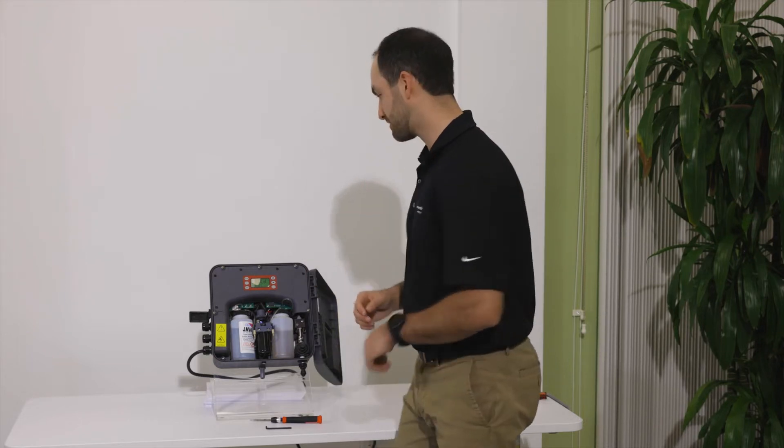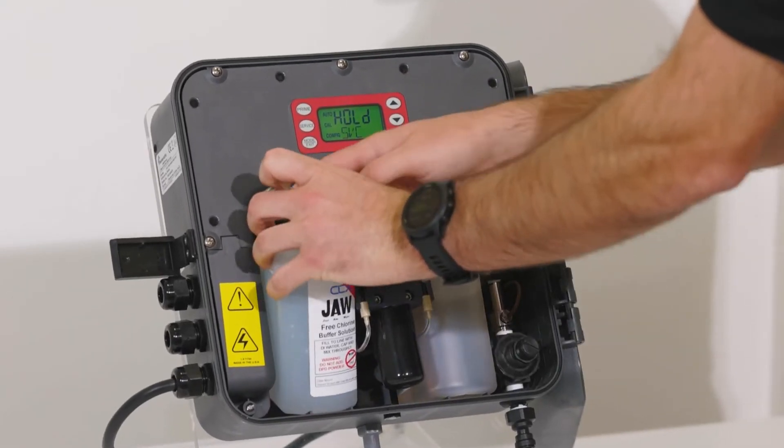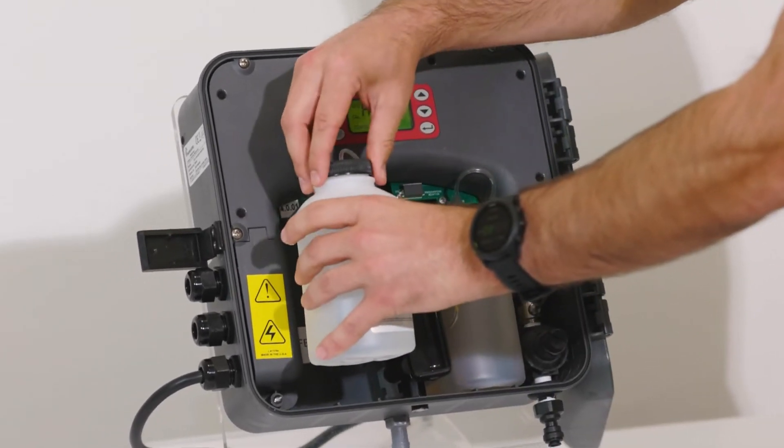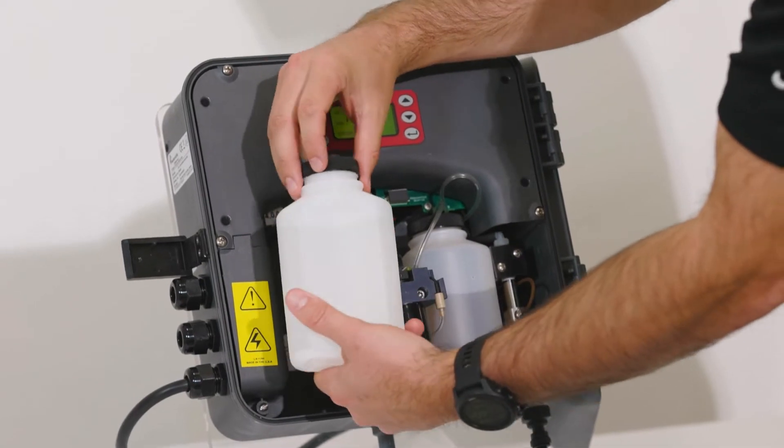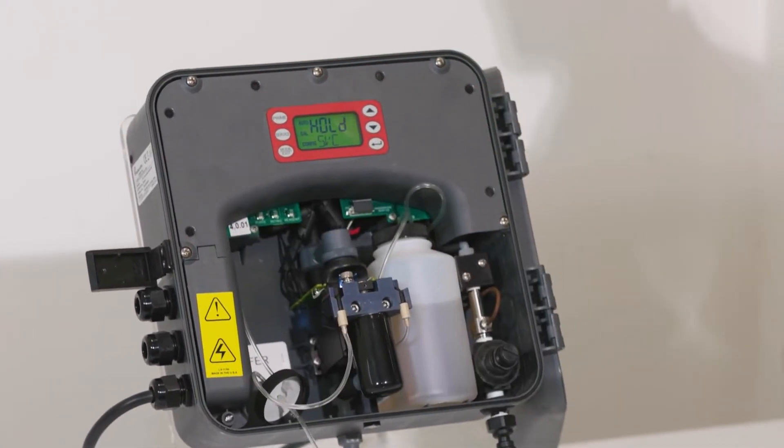First thing we're going to do is take our reagents out to give ourselves a little bit more space. When you take the reagents out, you want to hold the cap and twist the bottle out from underneath the cap. We'll do that for both sides.